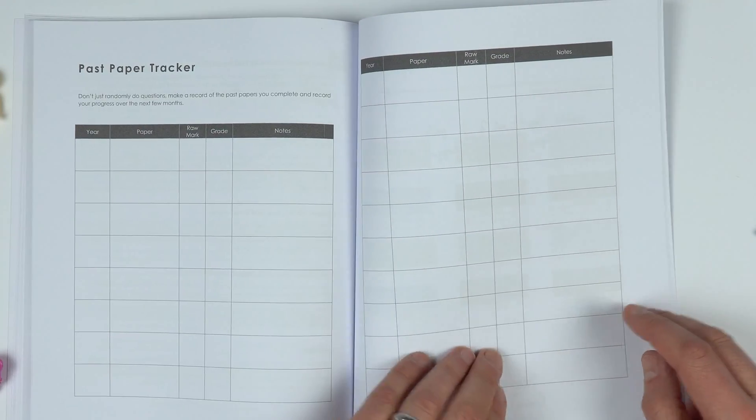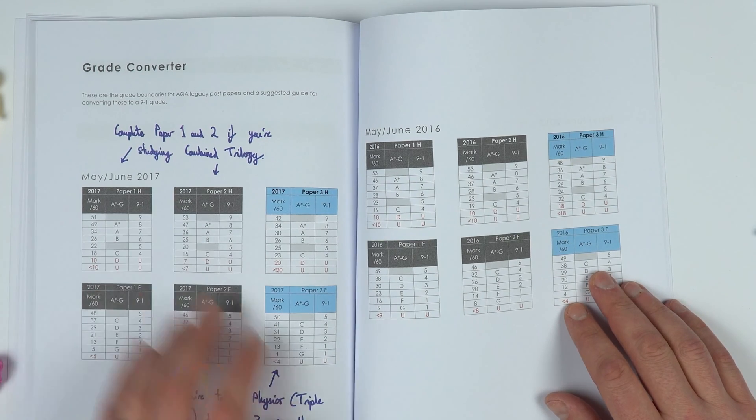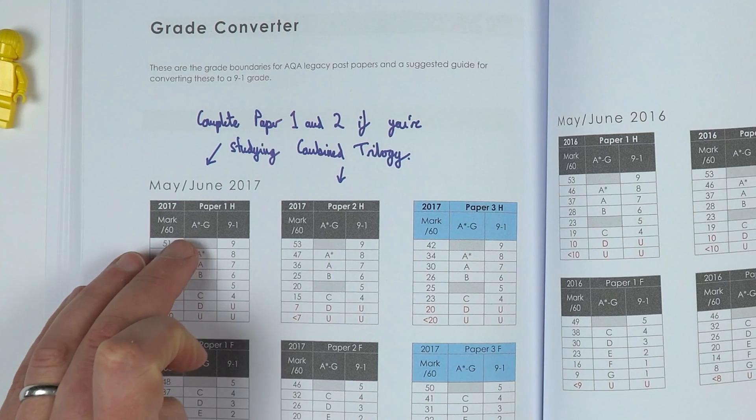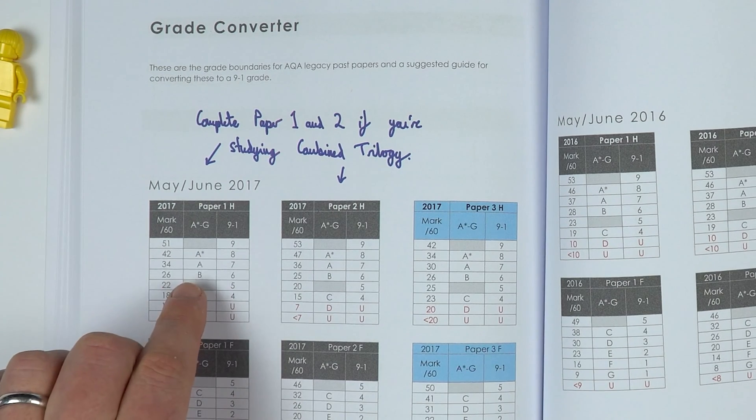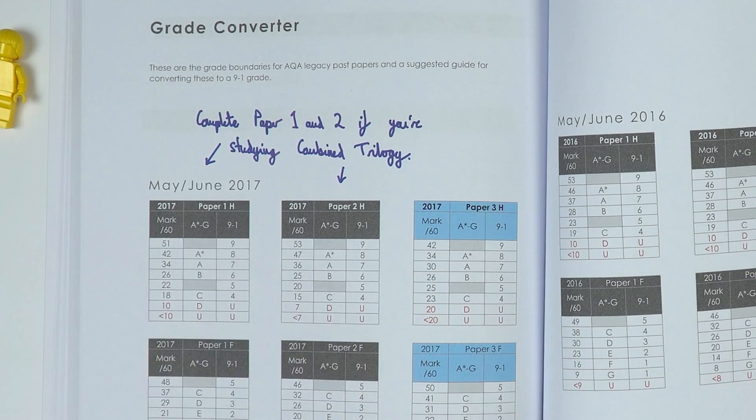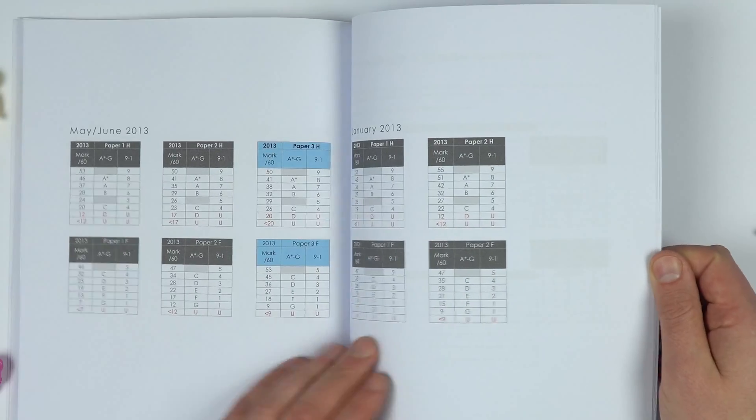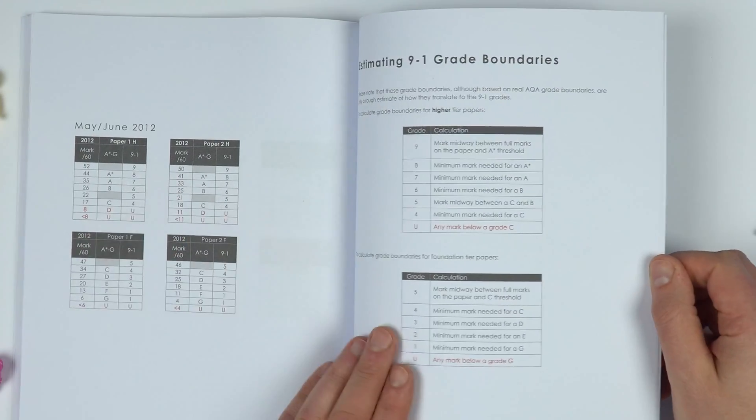I've got a handy past paper tracker you can download and fill in, and also this grade converter. When you're doing the old specification past papers which were graded A star to G, you can convert that A, B, or A star to your grade if it's a 6, a 7, an 8, or a 9. I've got these for all of the past papers going back to 2012.